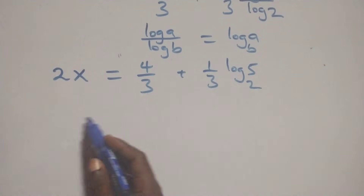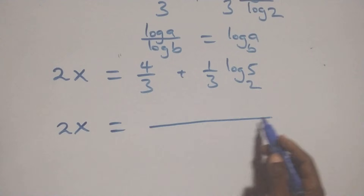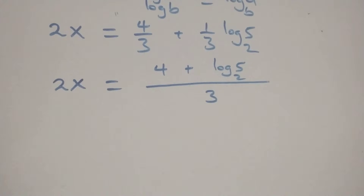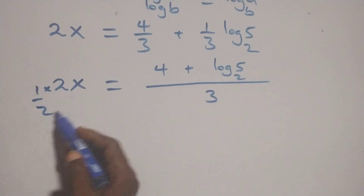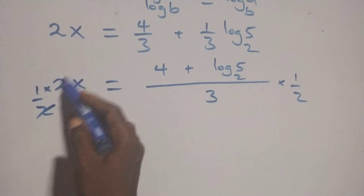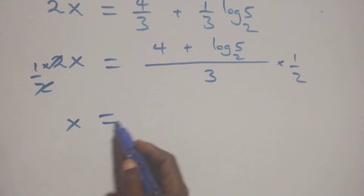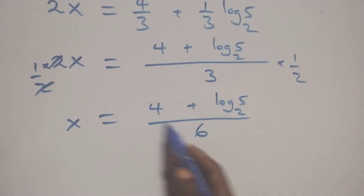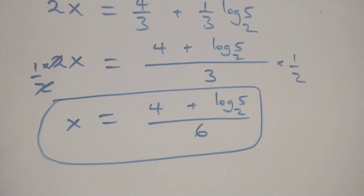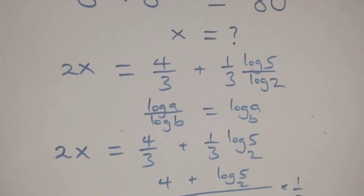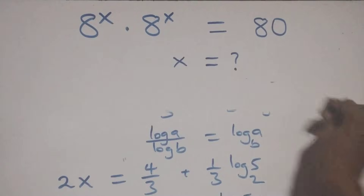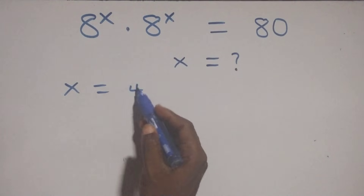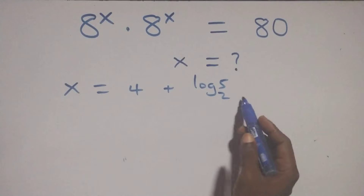Then, bringing this together as one fraction over 3, and multiplying both sides by 1 over 2, we get x equals (4 plus log base 2 of 5) over 6. That is the value of x. Let's check if this satisfies the given problem by substituting x equals (4 plus log base 2 of 5) over 6.